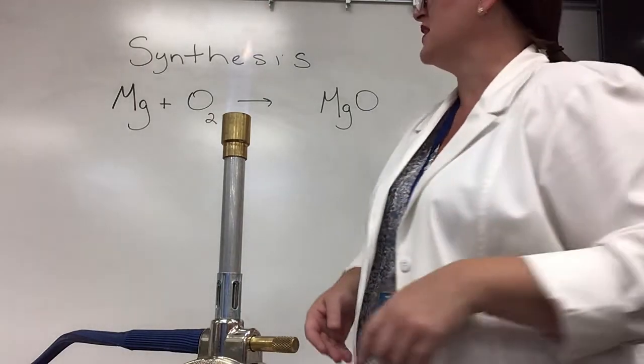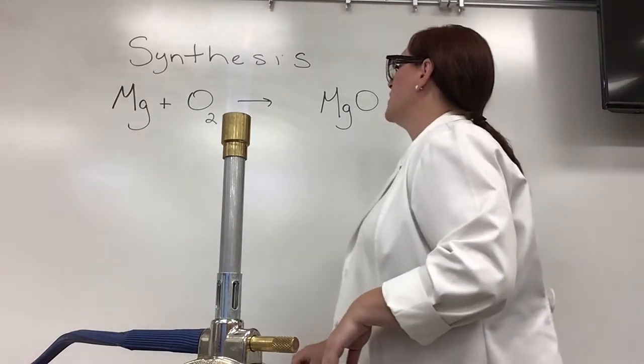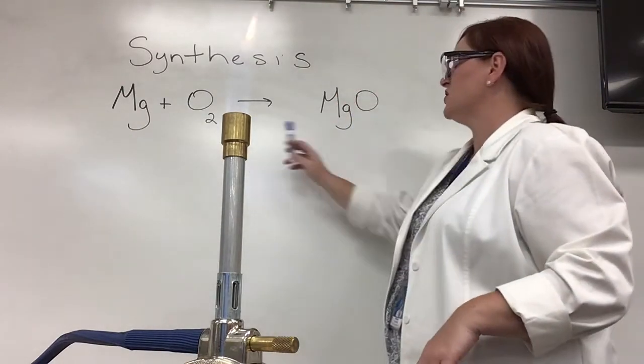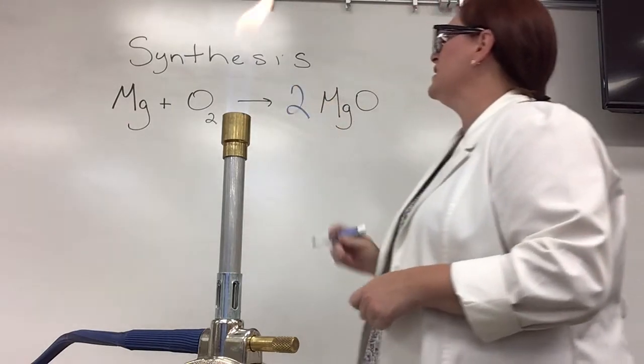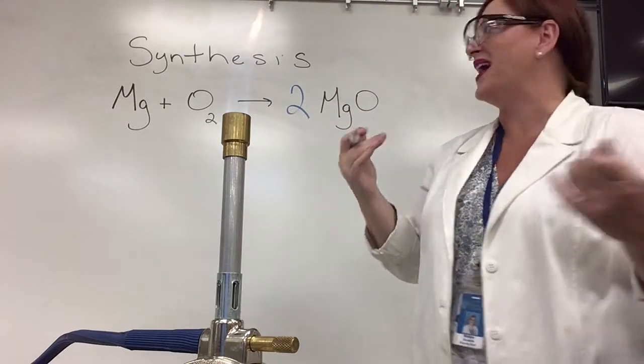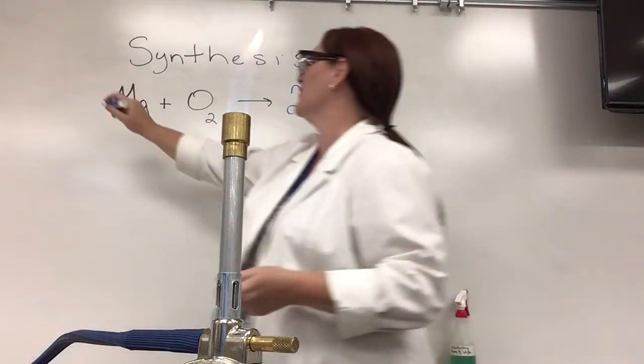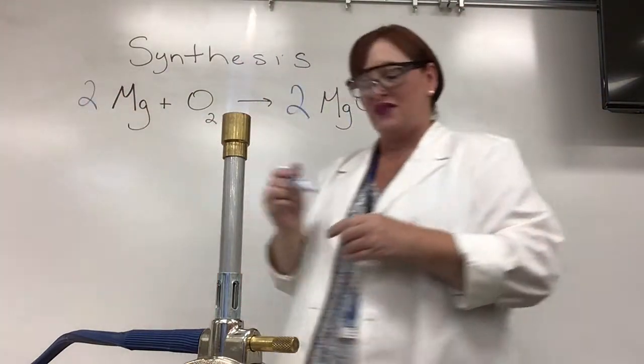Okay so let's balance this chemical equation. We have one magnesium, one magnesium, two oxygen, and one oxygen so obviously I need a two out front. That fixes my oxygen but it messes up my magnesium so I got to go back over here and put a two in front of that.